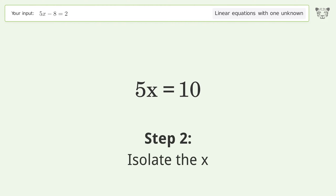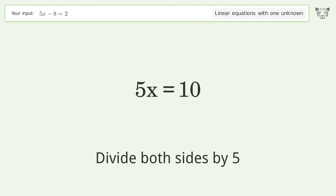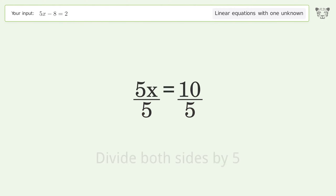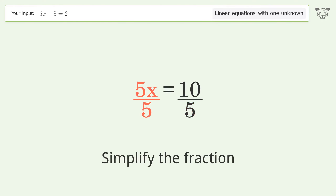Isolate the x by dividing both sides by 5. Then simplify the fraction.